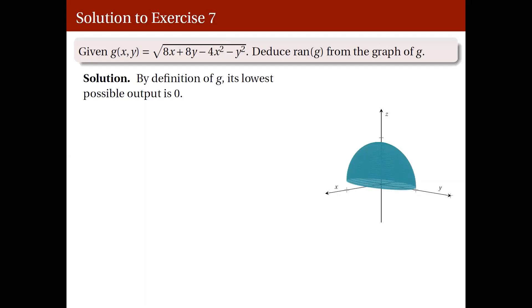And now, what we need to find is if it will end somewhere. If there's a highest possible value of z equal to g(x,y). Well, the graph here suggests there is. There's a highest possible value. Where could it be?